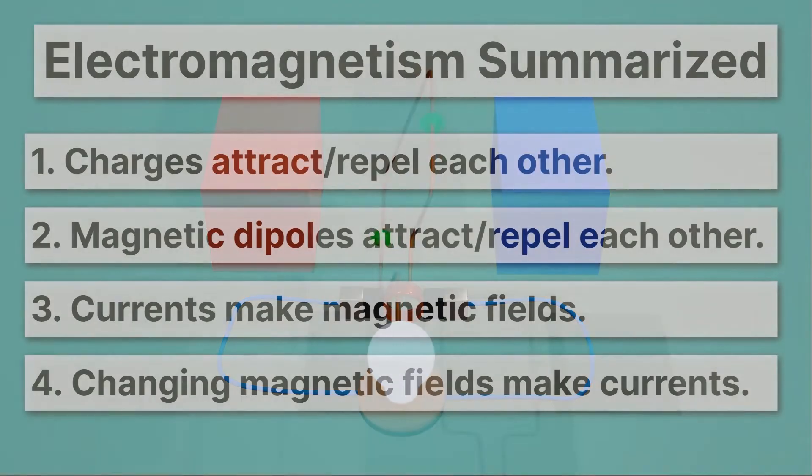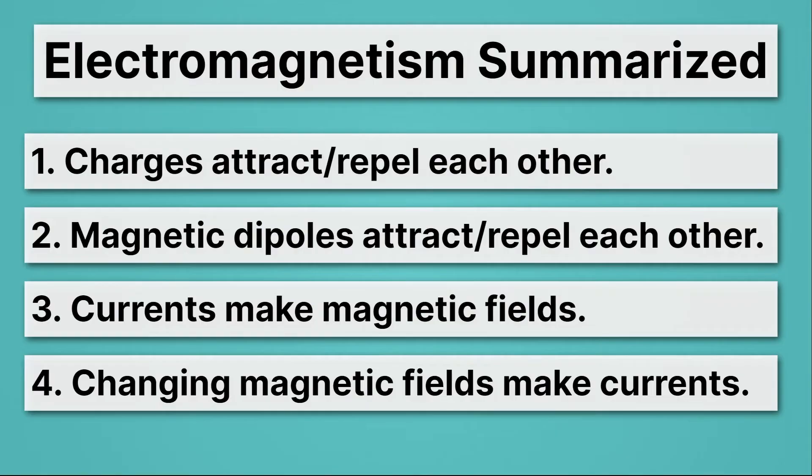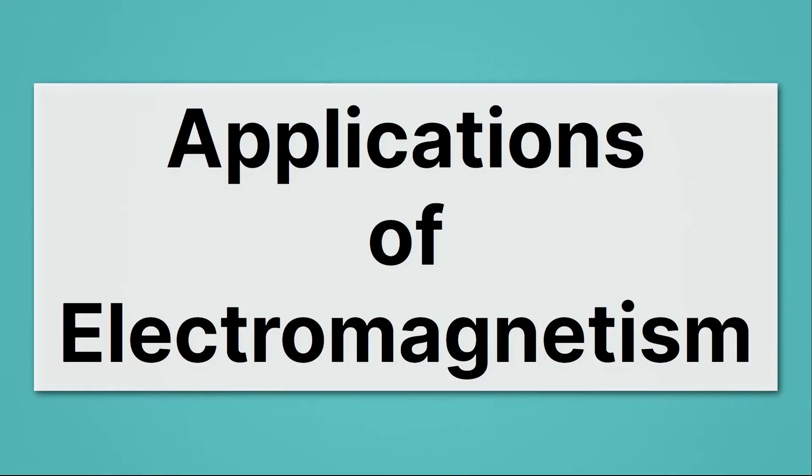So, here we have all the principles of electromagnetism. We're going to work through all of these in more detail in the coming unit. Now, let's talk about why electromagnetism is useful. Where do we apply it? Pretty much everywhere in our modern world.